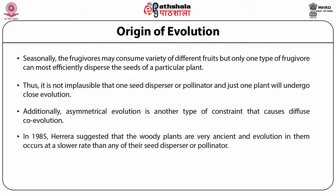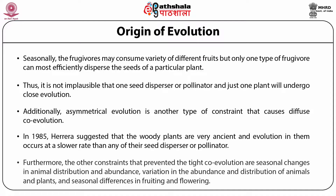For example, many pollinators visit plants for pollen but among them only one or two species can serve best for the flowers. Seasonally, frugivores may consume a variety of different fruits but only one type of frugivore can most efficiently disperse the seeds of a particular plant. Thus, it is not inevitable that one seed disperser or pollinator and just one plant will undergo close coevolution. Additionally, asymmetrical evolution is another type of constraint causing diffuse coevolution. In 1985, Herrera suggested that woody plants are very ancient and evolution in them occurs at a slower rate than any of their seed dispersers or pollinators. Furthermore, other constraints that prevent tight coevolution are seasonal changes in animal distribution and abundance, and variation in the abundance and distribution of animals and plants, and seasonal differences in fruiting and flowering.